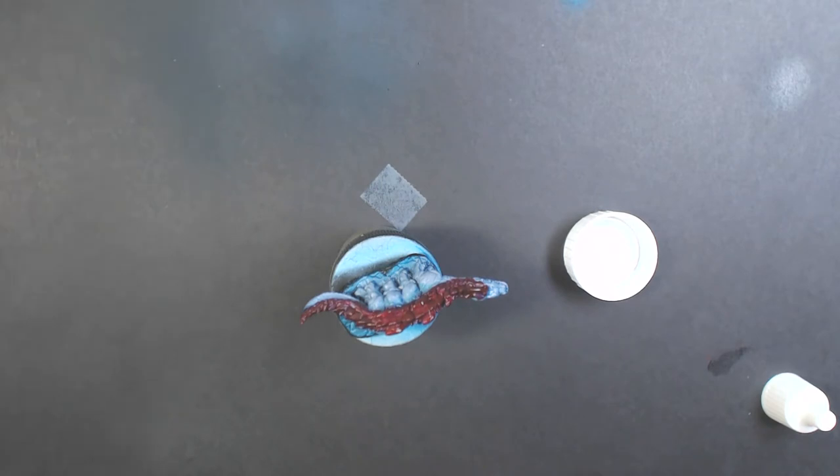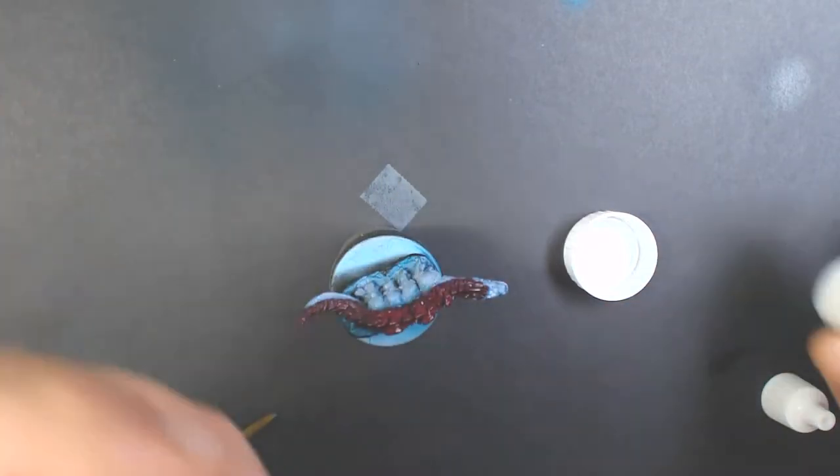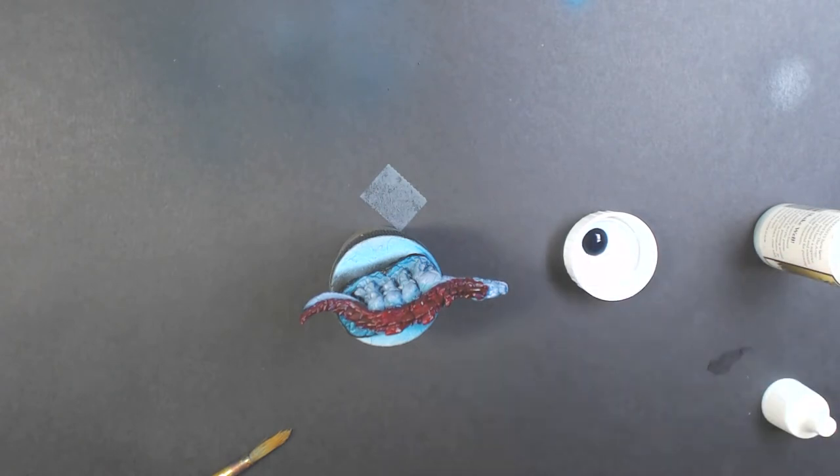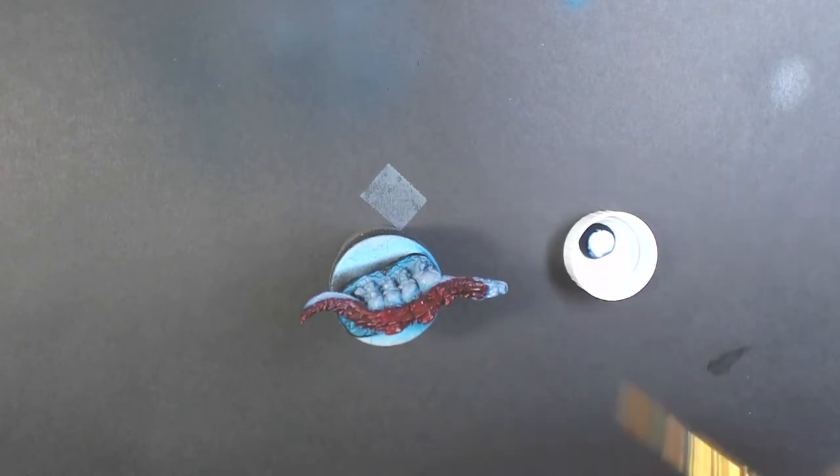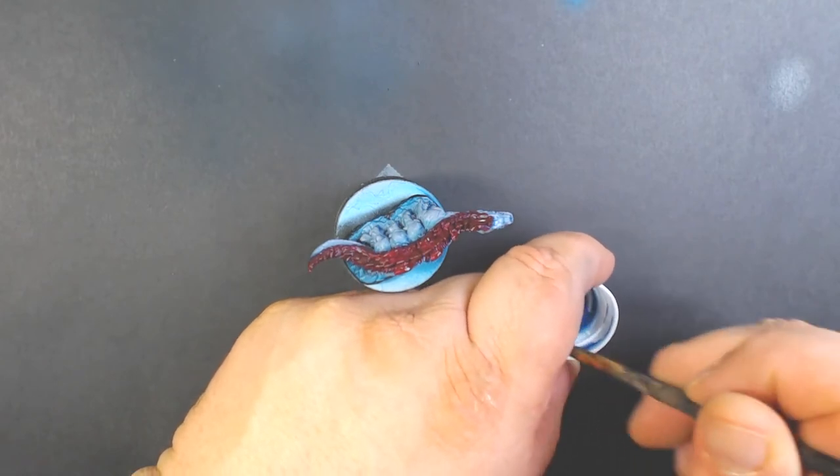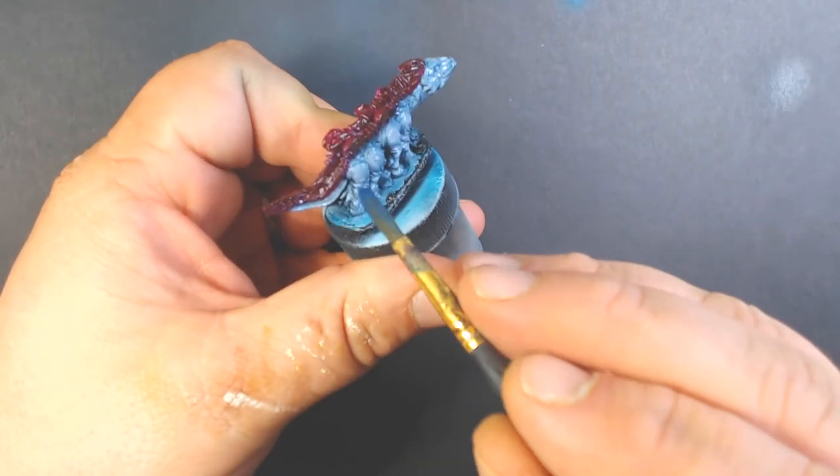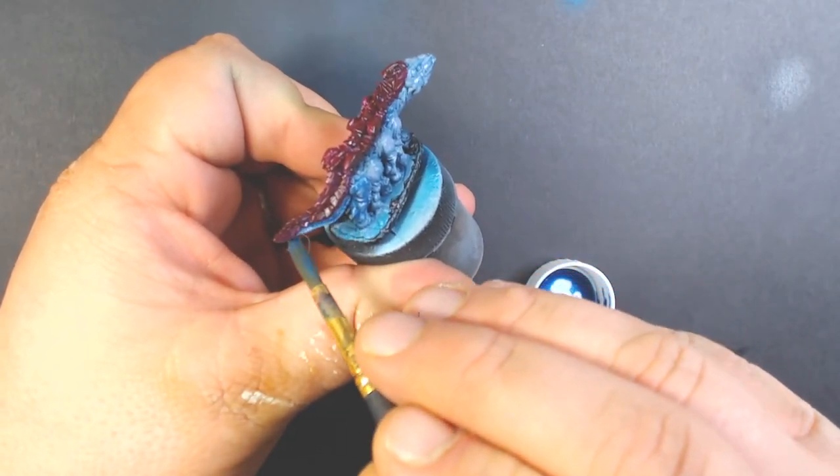Now I've sprayed the whole model with Vallejo gloss varnish and let that dry. Now we're mixing some Army Painter Blue Tone wash with Army Painter Quick Shade mixing medium, about a 50/50 mix, and we're just going to paint all of the bluish flesh.